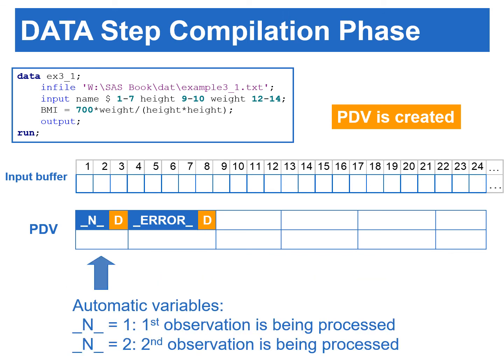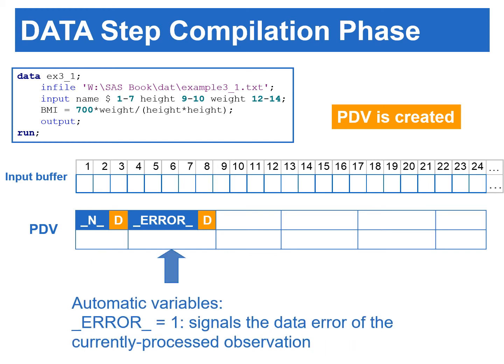Within the PDV, there are two automatic variables: _N_ and _ERROR_. _N_ equaling 1 indicates the first observation is being processed; _N_ equaling 2 indicates the second observation is being processed, and so on. The automatic variable _ERROR_ is an indicator variable with values of 1 or 0. _ERROR_ equaling 1 signals a data error of the currently processed observation, such as reading data with an incorrect data type.